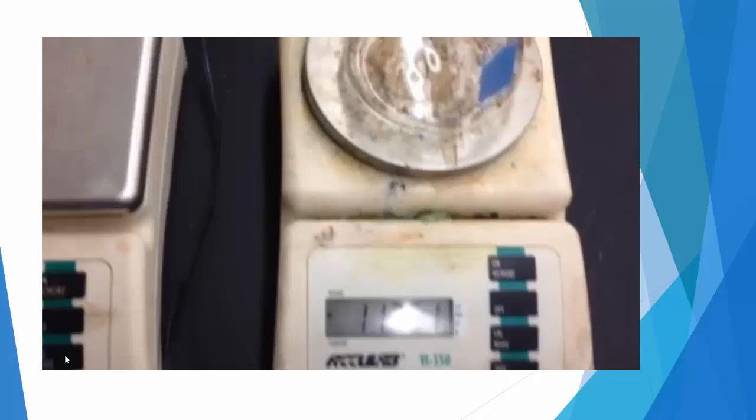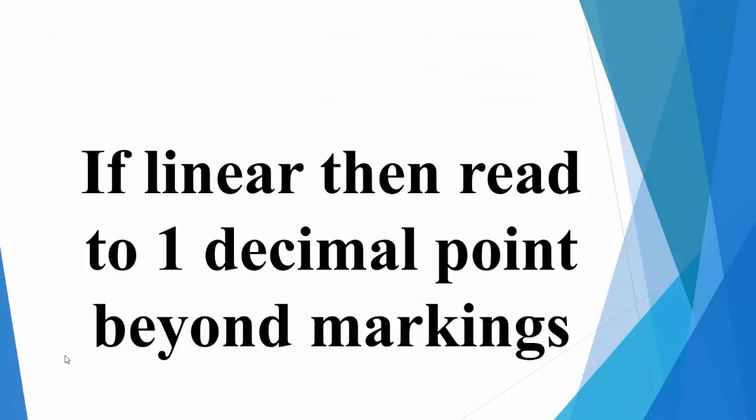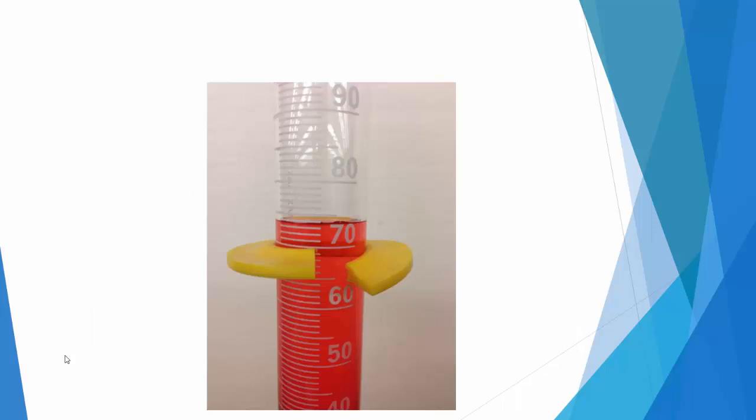So if you are using a device such as a ruler or a graduated cylinder that uses a linear scale, then what you need to do is to read it to one decimal point beyond the markings.